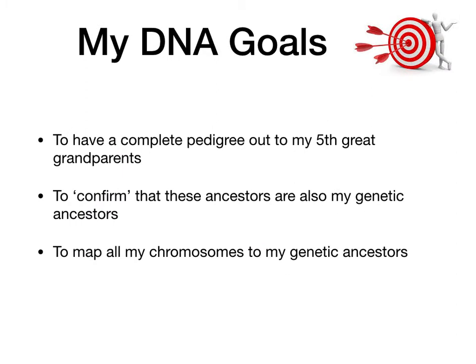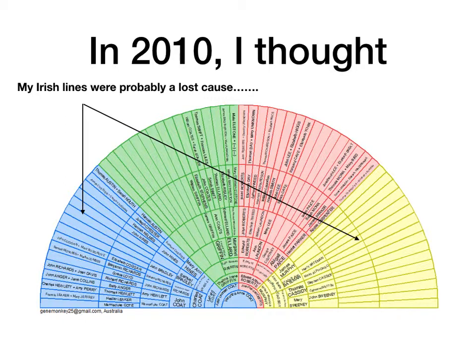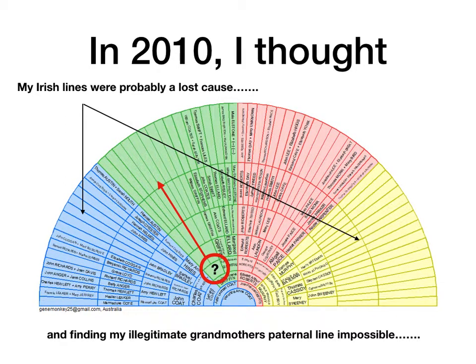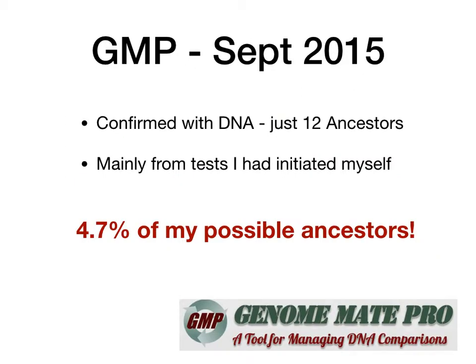So my DNA goals have changed eight years on. I'm now looking to have a complete pedigree out to my fifth great grandparents, confirmed that they are also my genetic ancestors, and to map all my chromosomes to those ancestors. Back in 2010 I thought my Irish lines were a lost cause, and finding my illegitimate grandmother's paternal side was impossible. But I've actually had some success on both those fronts. When I started using Genomate Pro in September 2015, just three years ago, I'd only confirmed with DNA 12 ancestors — mainly from tests I'd initiated myself, cousins I've had tested.